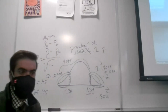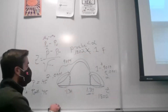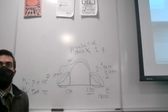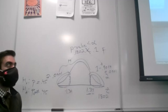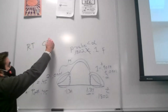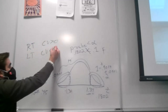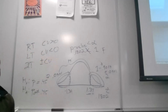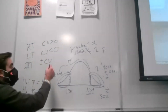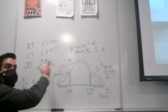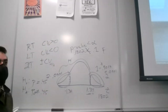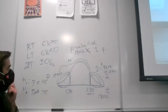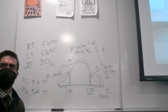A quick summary on critical values: for a right-tail test, critical values are always positive. For a left-tail test, critical values are always negative. For a two-tailed test, you always have a pair — one positive and one negative. For the two-tailed case, you look up alpha over 2 in each tail; for one-tailed tests, you use the full alpha in that one tail.